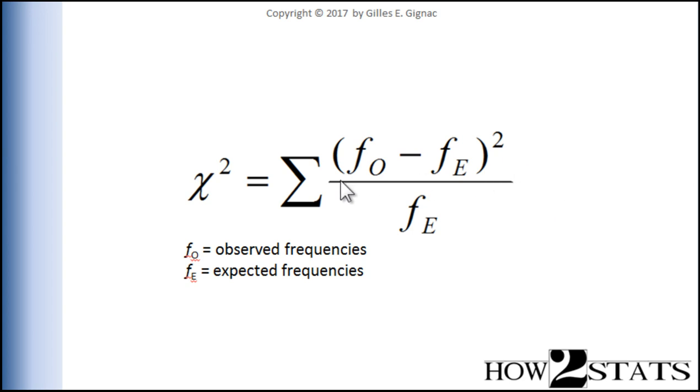The effect of the difference between observed and expected is divided by the expected frequencies, and then that is summed across all the rows.